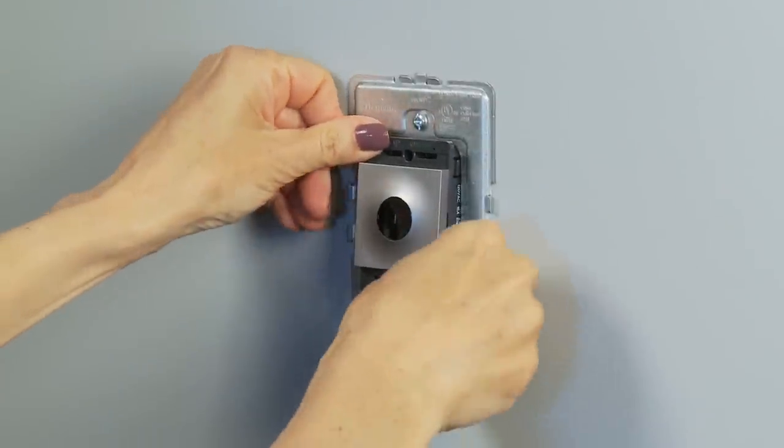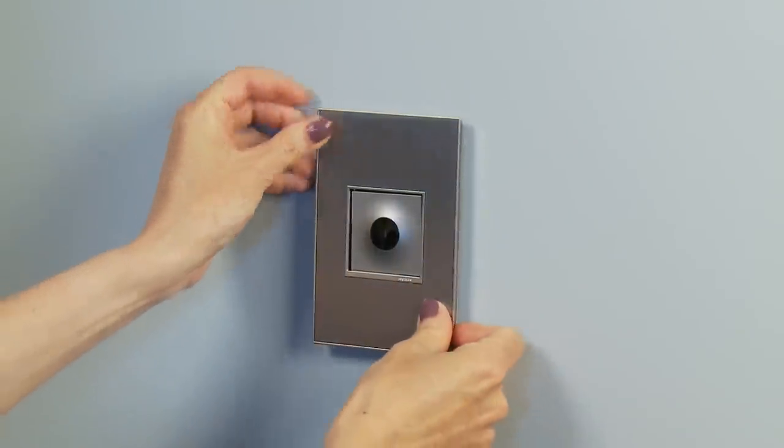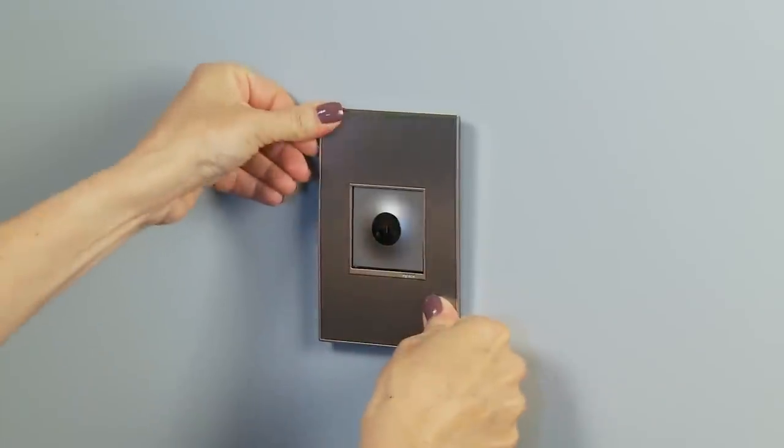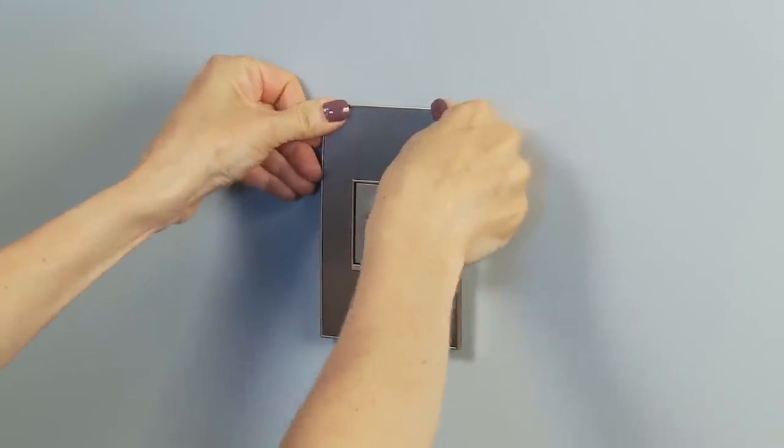Once your device has snapped into place, you can place the wall plate over the frame, making sure to push firmly on the top, bottom, and both sides of the wall plate.